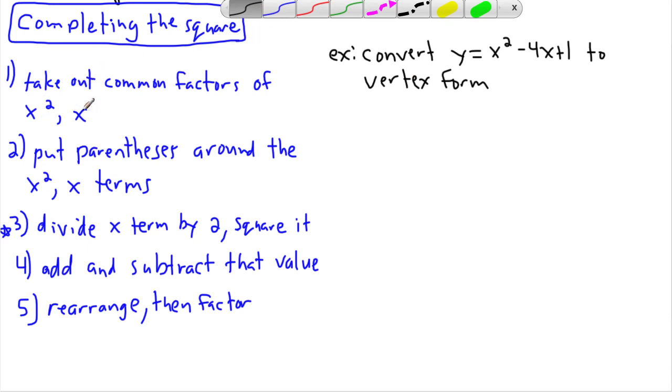Step one, take out common factors of x squared and x. The good news is there's nothing to do here, but I would look and try to take out a number that's common to the x squared and to the x. At the moment there's nothing common to them other than a 1. So step one is easy.